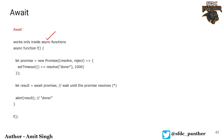The await keyword is always used inside an async function or any function that returns a promise. In this code we have an async function f. There is a promise that returns 'done' after 1000 milliseconds. We use await, so it will wait until that 1000 milliseconds is complete and then alert the result. This particular line will be paused and will not execute until the awaited line has resolved and returned that result.